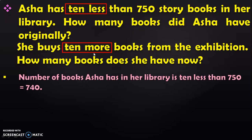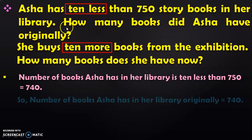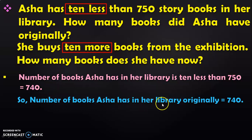After identifying the keywords, the next step is to write the available information. We know that the number of books Asha has in her library is 10 less than 750. So we have to find out 10 less than 750. To find 10 less than a number, we look at the tens place and subtract 1 from that value. In the tens place, we have 5. Subtracting 1 from 5 gives us 4, so 10 less than 750 is 740. The number of books Asha has in her library originally is 740 books.